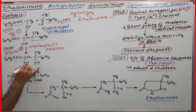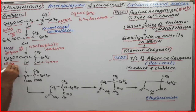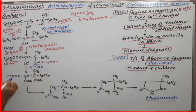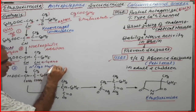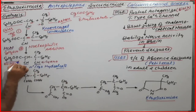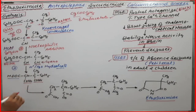After nucleophilic addition, we have two cyano groups and one ester group in the intermediate. The third reaction is hydrolysis using acid and water. Both the cyano groups hydrolyze to carboxylic acid groups, and the ester group also hydrolyzes to a carboxylic acid, giving a tricarboxylic derivative.